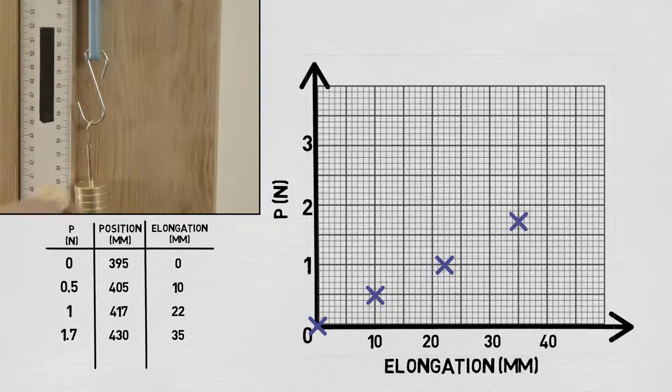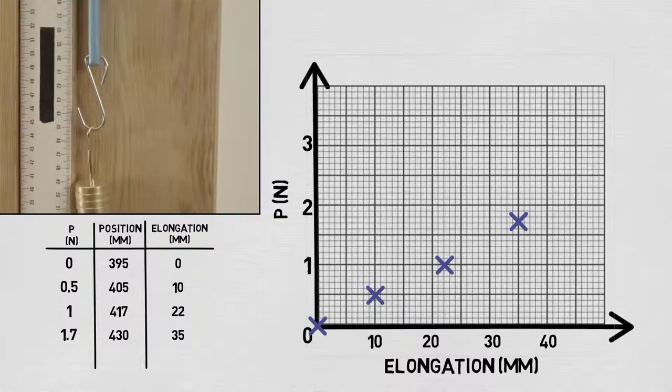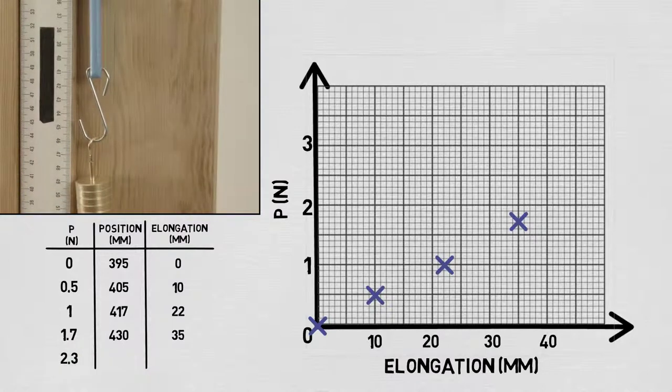We'll take one more data point. The last weight brings us up to a total of 2.3 newtons. Reading the ruler, we measure a total deformation of 47 millimeters, or 442 millimeters on the ruler.